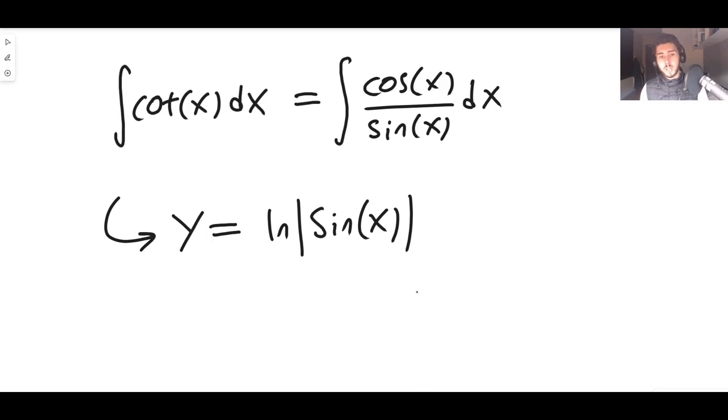So when we differentiate the natural log of sine x, our derivative here is going to be, well the derivative of sine is cos, so it's going to be cos x over sine x. But that actually is cot x, it's exactly what we want this time.